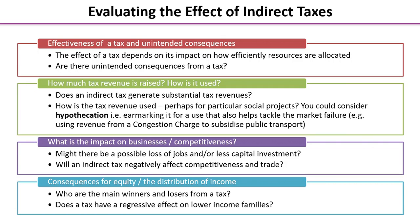The first additional consideration is unintended consequences. For example, as taxes have risen on cigarettes and tobacco in the UK, there has been much more incentive to smuggle those items into the country. That incurs costs in terms of police time, customs time, and the legal system. Furthermore, the quality of cigarettes and tobacco imported illegally to avoid the tax may be much more dangerous for health — potentially fewer filters, and we don't know what the cigarettes and tobacco have been cut with.